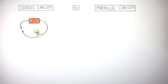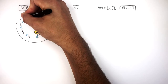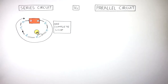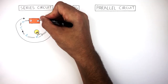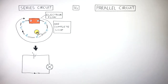Electrons are repelled by the negative terminal. The electrons flow through the metal wire and components, flowing around the circuit in one complete loop. As this is a real circuit, the electrons flow from the negative terminal of the cell around the circuit to the positive terminal of the cell. This is known as the electron flow.